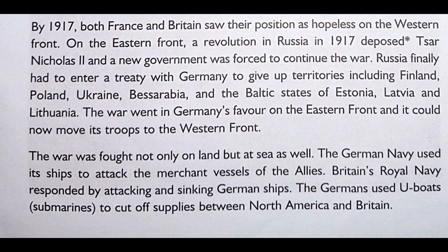On the Eastern Front, a revolution in Russia in 1917 deposed — deposed meaning removed from office suddenly and forcefully — Tsar Nicholas II, and a new government was forced to continue the war. Russia finally had to enter a treaty with Germany, giving up territories including Finland, Poland, Ukraine, Bessarabia, and the Baltic states of Estonia, Latvia and Lithuania. The war went in Germany's favour on the Eastern Front.